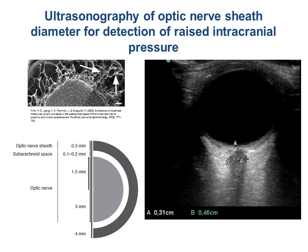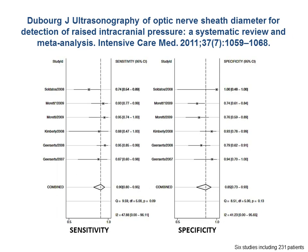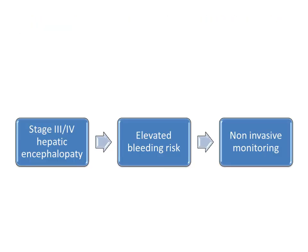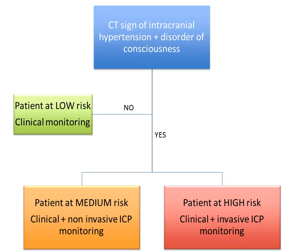It is a strong indicator, but cannot measure ICP precisely. We can use other devices — for example, an echo of the optic nerve sheath, which is linked to the intracranial subarachnoid space, and the expansion of the nerve is associated with ICP. The sensitivity and specificity of this method is higher than transcranial Doppler when ICP goes up fast. If you have a patient at risk but with an elevated bleeding risk, you have to weigh the information against the risk — probably non-invasive monitoring is the right choice.